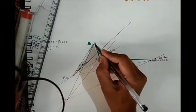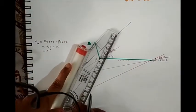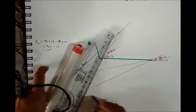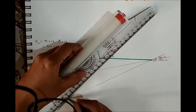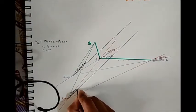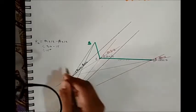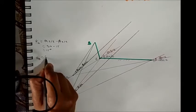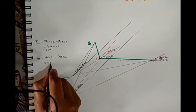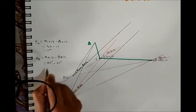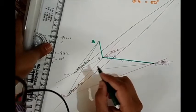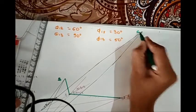Similarly, from line BR13, take an angle equal to θ13/2 − φ13/2. So that angle equals 45° − 25° = 20°. Extend this line and take the intersection point of these two lines — that is nothing but point C.